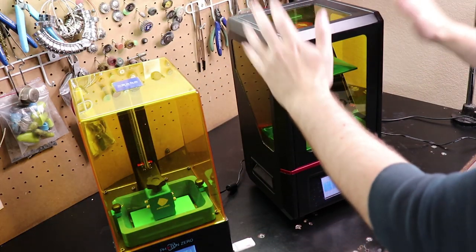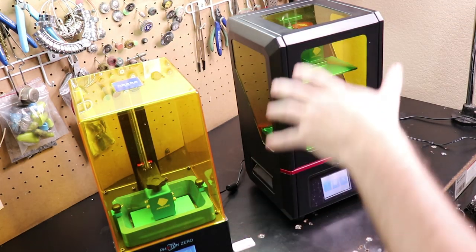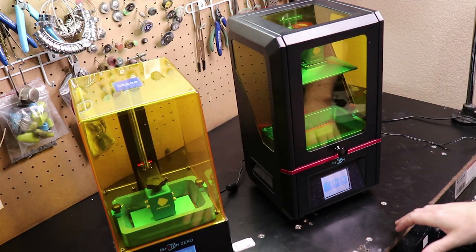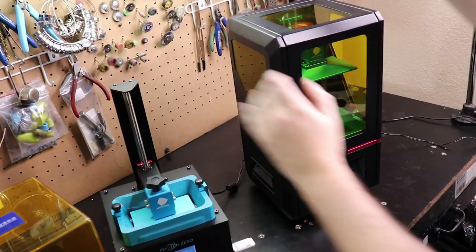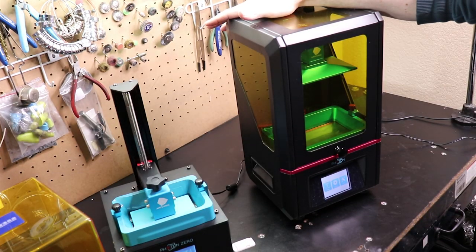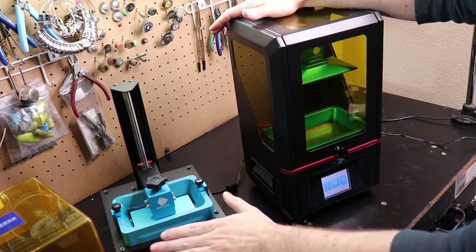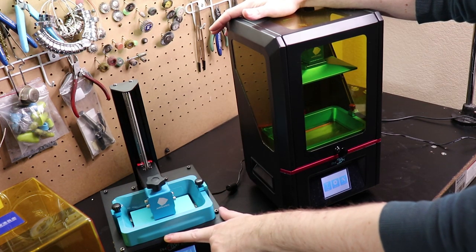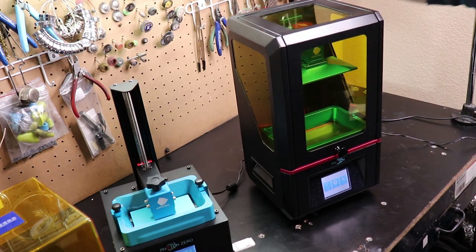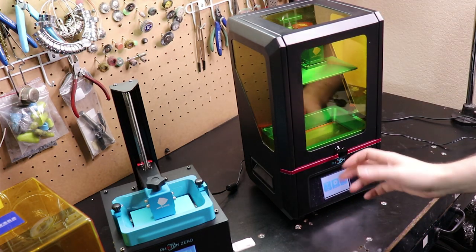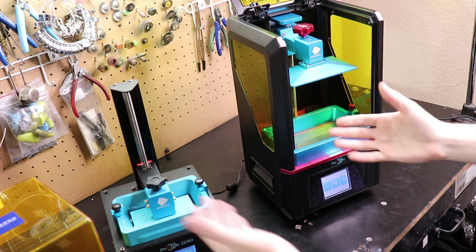As you can see, the original Photon is quite a bit bigger than the new Zero version, and it looks quite a bit different. And for a good reason. This is about $260 right now on Amazon, and this is going to be only $169, and that's the starting price. This started out at like what, $400? So yeah, big difference in price. But it also comes with a difference in build volumes.